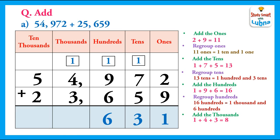After this, we will add the thousands: one, four, and three. One plus four plus three equals eight, so we simply write eight in the thousands column. After this, we add the digits in the ten-thousands column: five and two. Five plus two equals seven.